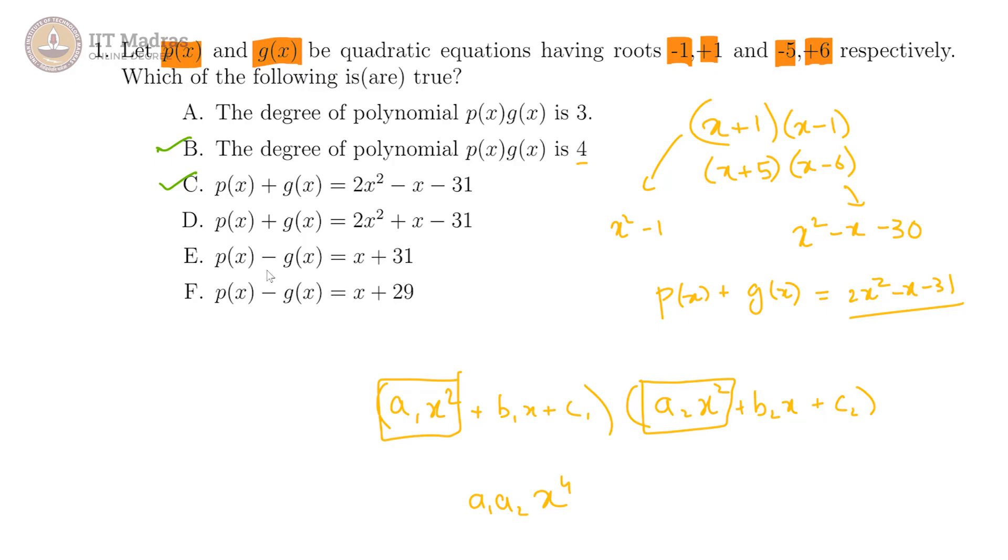And now we are looking at the difference p(x) minus g(x), and that would give us x² minus 1 minus of x² minus x minus 30, which is x² minus 1 minus x² plus x plus 30. So x² minus x² cancel off and you have x plus 29.